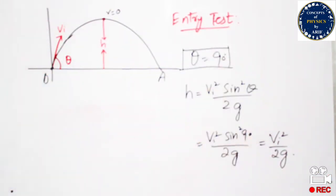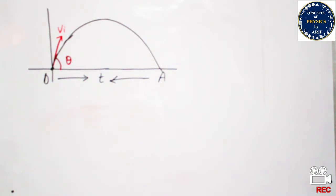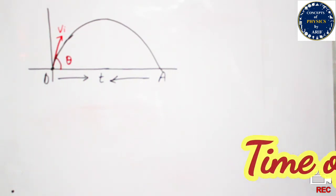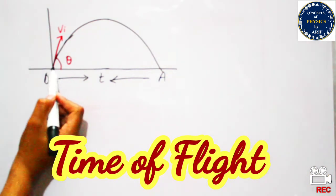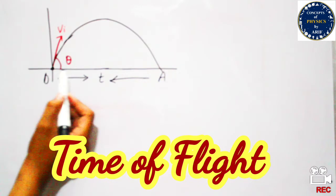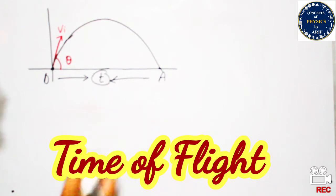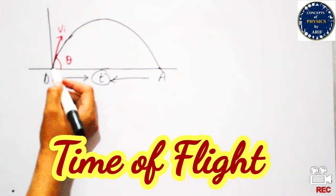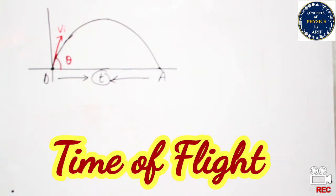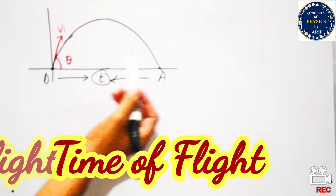Next, we will find out the time of flight of projectile motion. Time of flight may be defined as the time taken by a body to cover the distance from its initial position to the final position when it hits the ground. This time of flight can be calculated by knowing the initial point, final point, and the gap — meaning the time taken by the body from initial to final point.